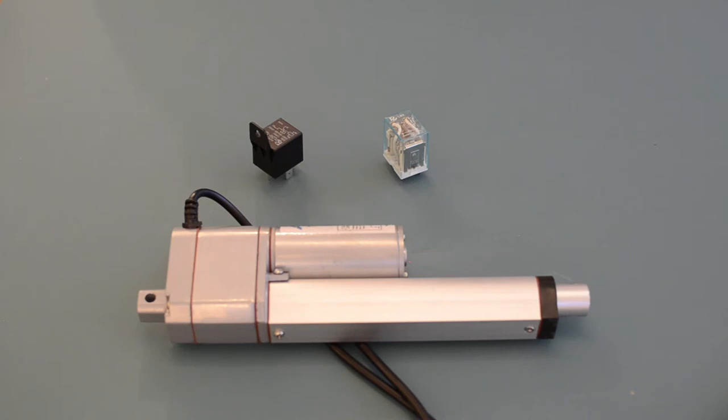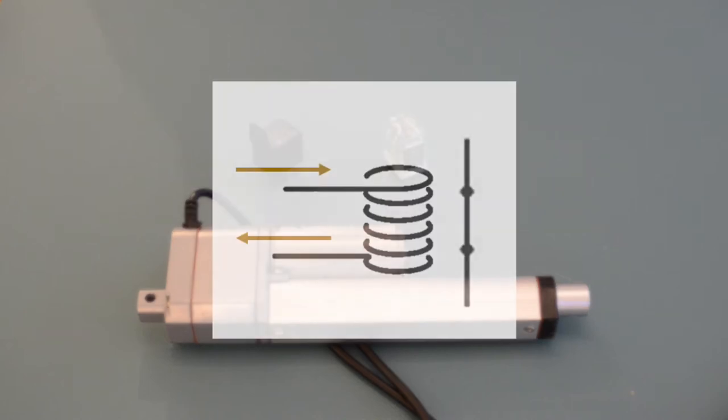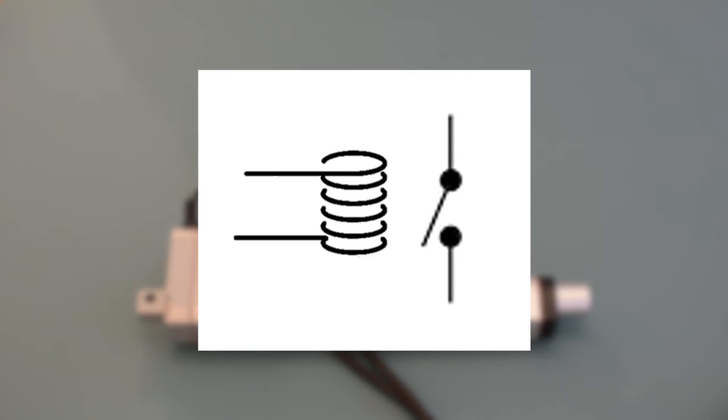Relays consist of two isolated circuits, one control circuit used to control the switch and the other circuit containing the switch. As the control circuit is energized, current flows through a coil that produces a strong enough magnetic field to close the switch. When the coil is de-energized, the switch opens again.